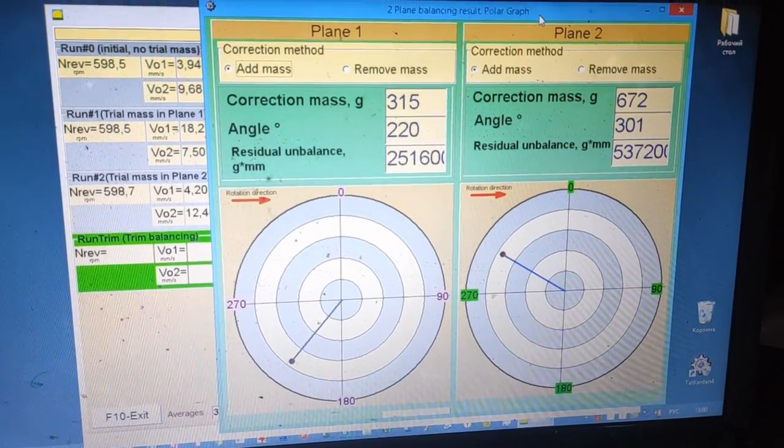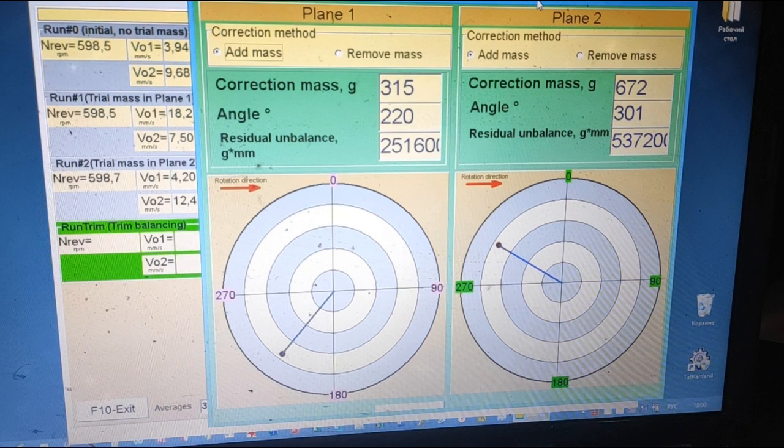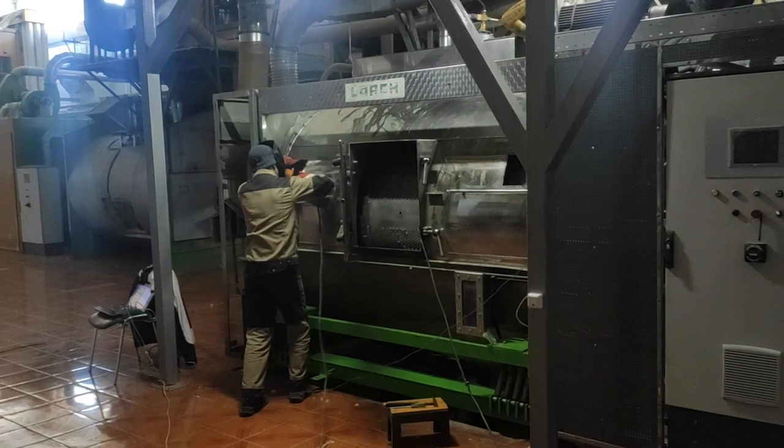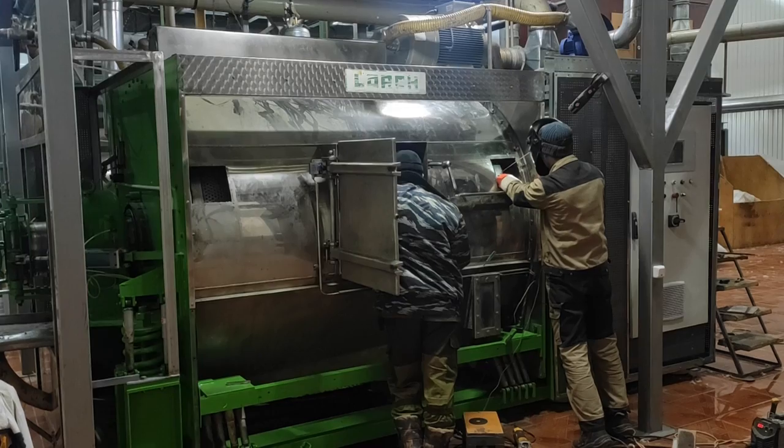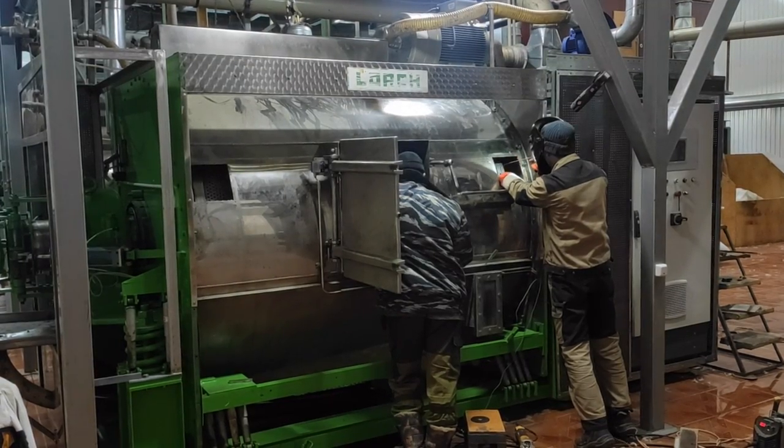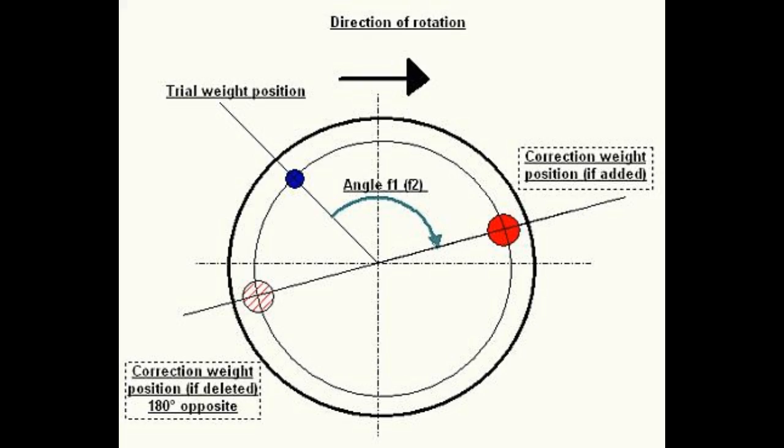Take off test weight. The program showed how much weight and at what angle to add or remove weights to balance the rotor. Weld correction weights in both planes. The angle is counted from the point of the test weight in the direction of rotation of the rotor.